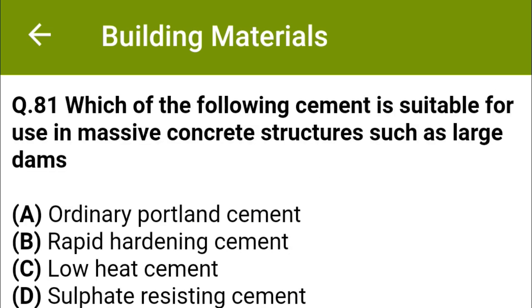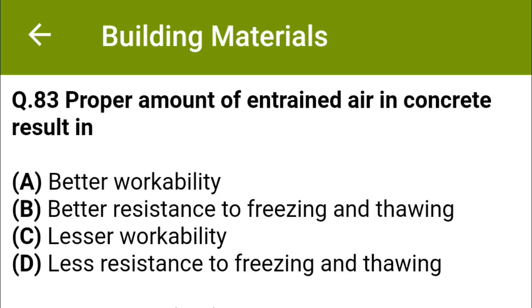Which of the following cement is suitable for use in massive concrete structures such as large dams? Option A, ordinary Portland cement; option B, rapid hardening cement; option C, low heat cement; option D, sulphate resisting cement. The correct answer is option C, low heat cement.